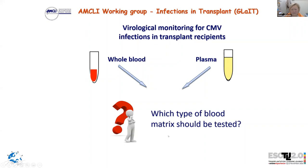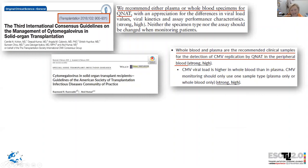A very important and longstanding international question is: which type of blood matrix should be tested — whole blood or plasma — during virological monitoring in the post-transplant period? The last international consensus guidelines recommend that both whole blood and plasma are suitable for detection of CMV replication.